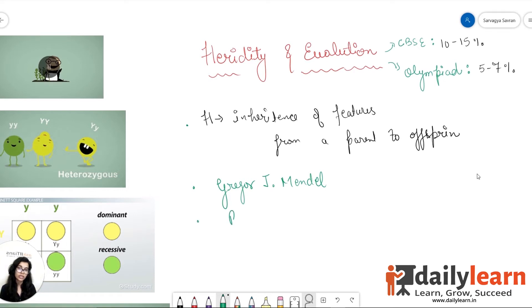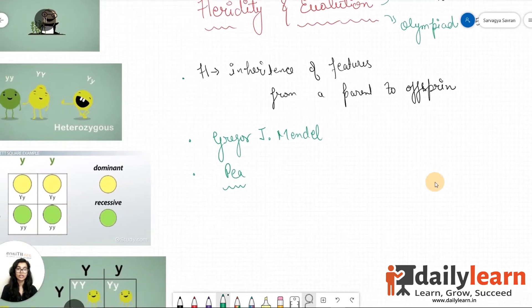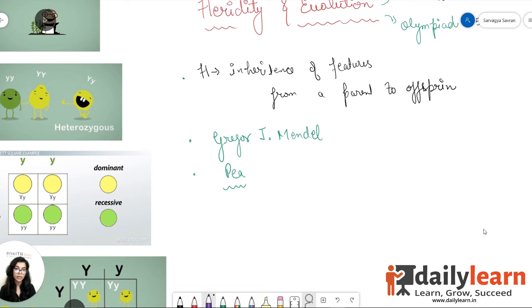He took the pea plants as his model organisms or as his model species, and the importance of taking the pea plants was huge because the pea plant had a smaller life cycle. Also, it had a number of features which could be seen easily without a microscope, so it had major features which were easily noticeable. And apart from that, another important beneficial characteristic that the pea plants had was that it could be easily interbred with other species.